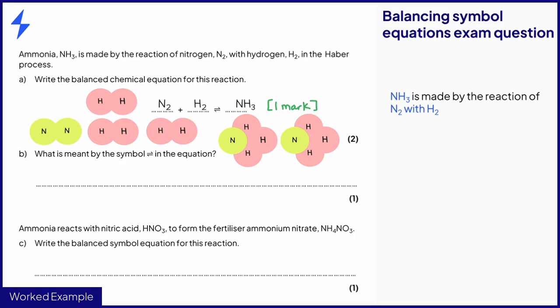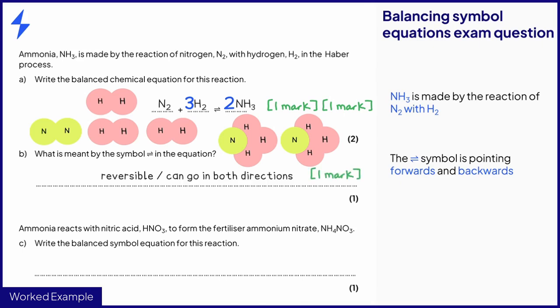Overall, we have one nitrogen molecule reacting with three hydrogen molecules to form two ammonia molecules. Correct balancing gains the second mark. In part B, the symbol with two arrows pointing forwards and backwards shows that the reaction is reversible. This gains one mark.